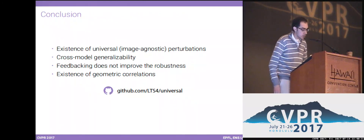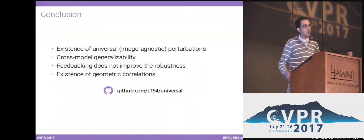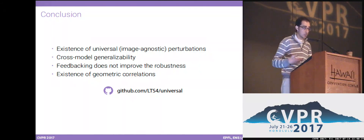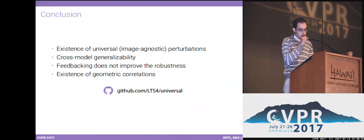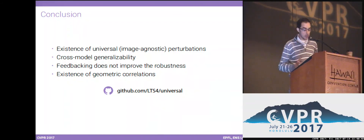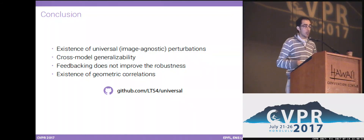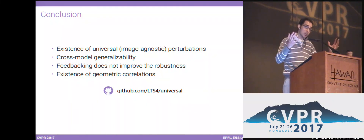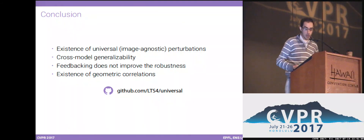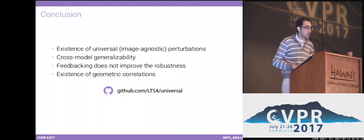In conclusion, the main points of this talk were: there exist universal, image-agnostic perturbations that cause deep neural networks to fail on most natural images; these universal perturbations generalize well across different neural networks; data augmentation with them does not meaningfully improve robustness; and these perturbations are closely related to the geometry of the decision boundary of deep neural networks. The code is available online. Thank you very much.